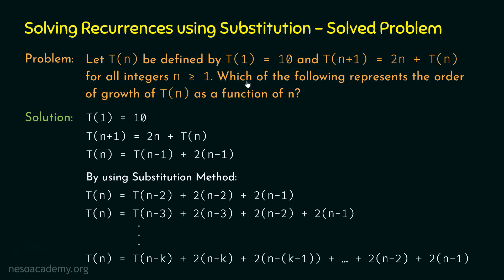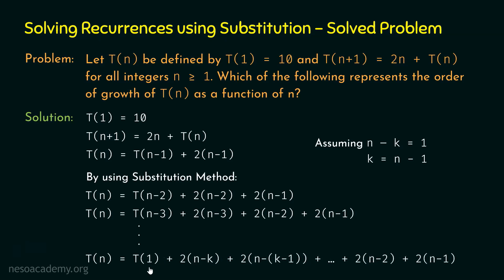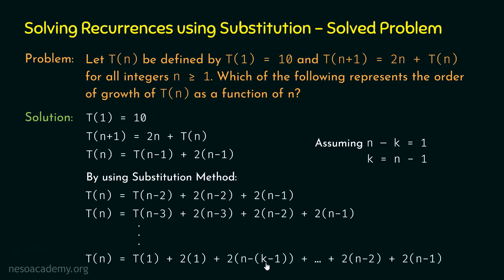We know n minus k equals 1, so k equals n minus 1. Replacing k by n−1, t(n−k) becomes t1 equal to 10. The first sum term becomes 2(n − (n−1)) equals 2 times 1, the next becomes 2 times 2, and so on, continuing up to 2(n−2) plus 2(n−1). We can take 2 as a common factor from the summation, giving 2 times (1 + 2 + 3 + ... + (n−1)).